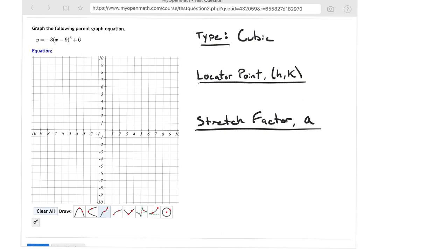The locator point, you have to do the opposite of what you see inside. So that's a negative 9, which means h is a positive 9, and k is a positive 6.